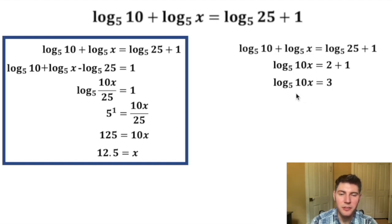So to finish this up, we're going to do the definition of logs again. 5 to the power of 3 equals 10x. 5 cubed is 125, so we have 125 equals 10x.